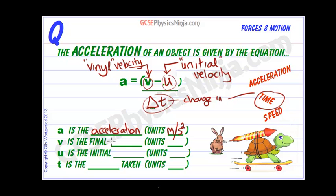V is the final velocity and the unit of velocity is meters per second. U is the initial velocity, initial velocity again units meters per second. And T is the time taken and units of that are just seconds. So there we are, an equation for finding acceleration and I believe this is given in your formula booklet, that acceleration equals V minus U upon T.